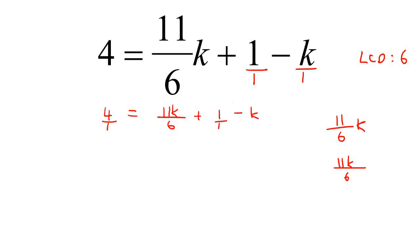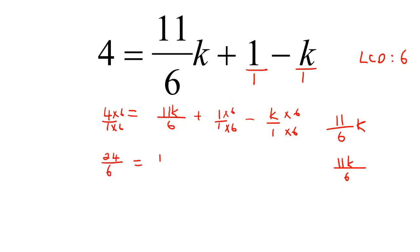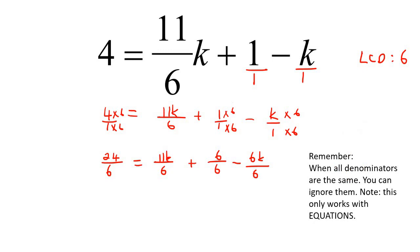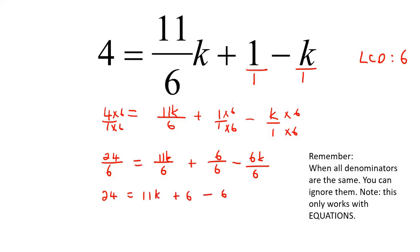Now put everything over 1. The lowest common denominator is 6, so we multiply the relevant terms by 6. That gives us 24 over 6 equals 11K over 6 plus 6 over 6 minus 6K over 6. Remember: when all denominators are the same in an equation with an equal sign, you can ignore them. So we get 24 equals 11K plus 6 minus 6K.